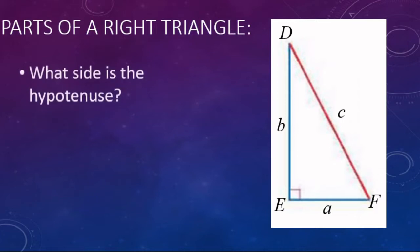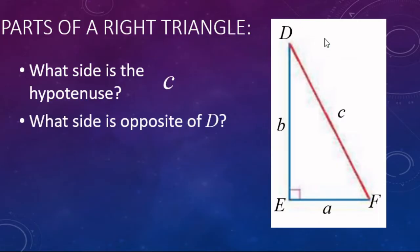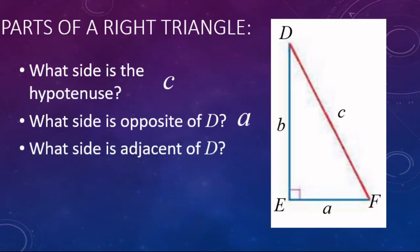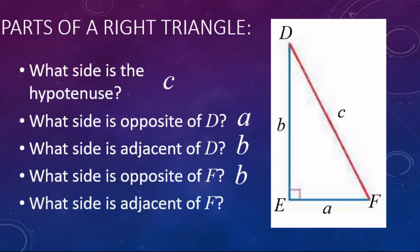Let's try it again with this triangle. The hypotenuse is opposite the 90 degree angle - the longest side, letter C. Now looking for the opposite leg from angle D at the top: the opposite leg is going to be on the bottom, side A. The adjacent side is touching the angle but not the hypotenuse - that's letter B. Now switching to angle F on the right: the opposite leg is letter B. And the adjacent to F is side A - the side touching F that's not the hypotenuse. Adjacent means next to.